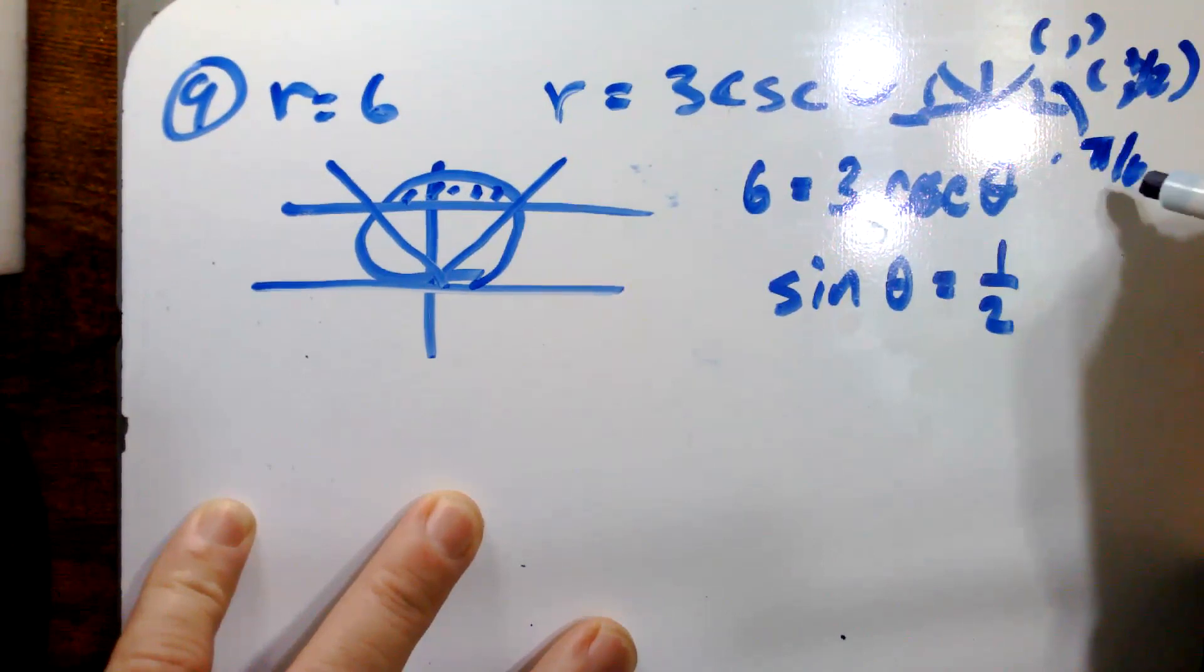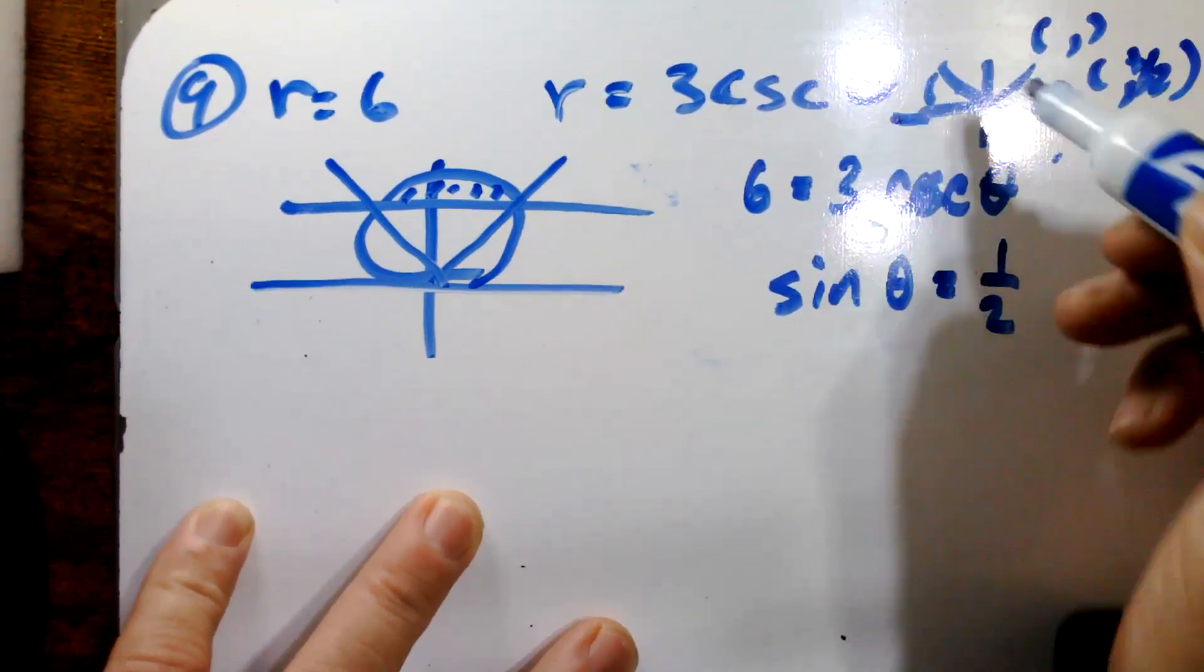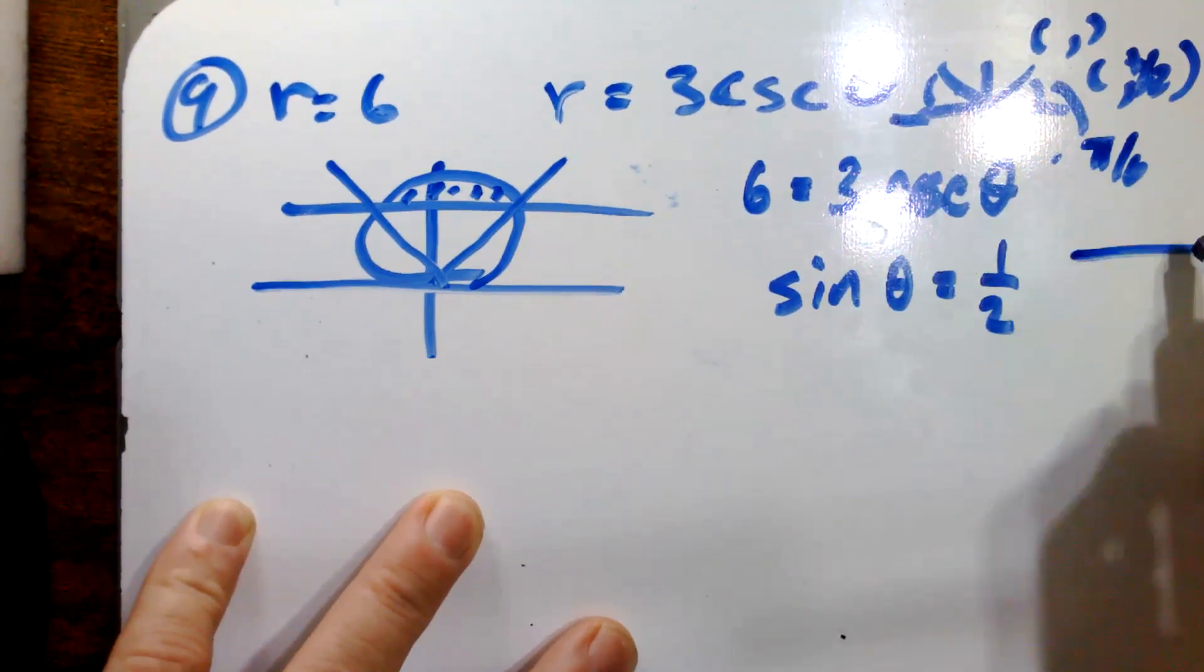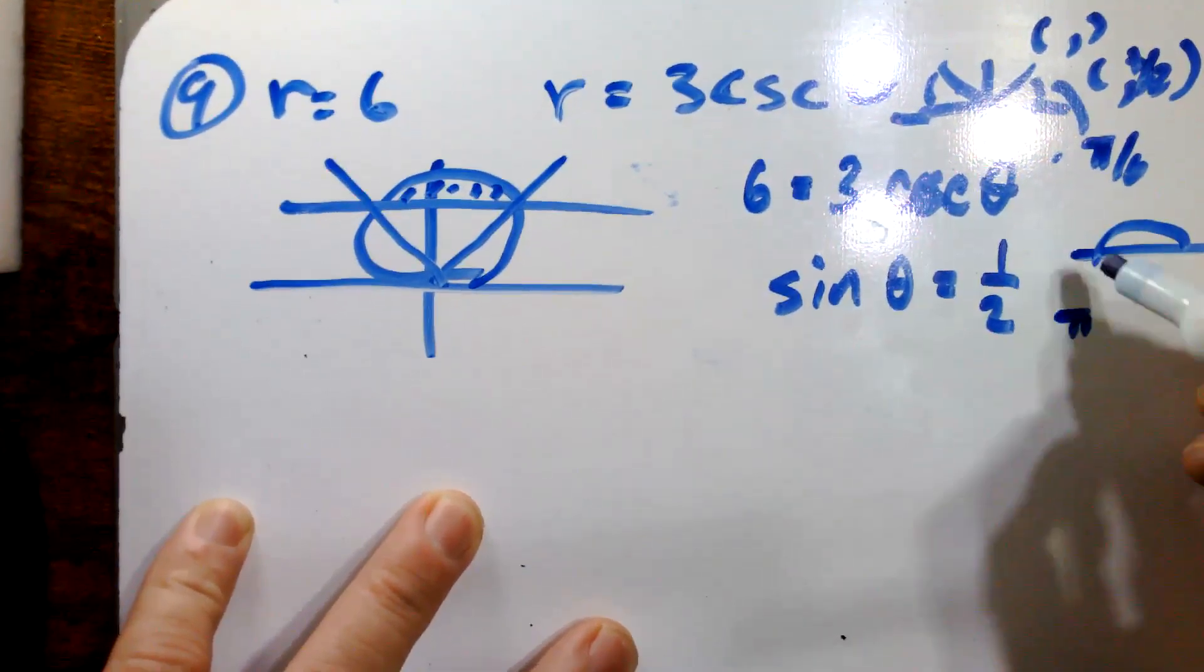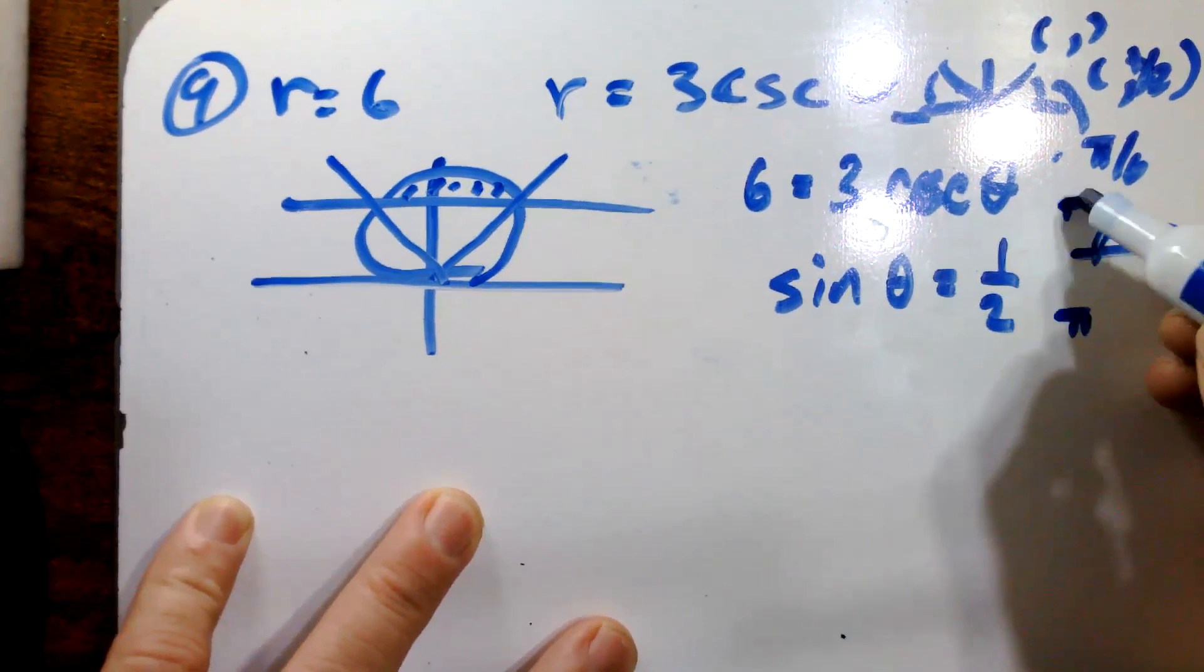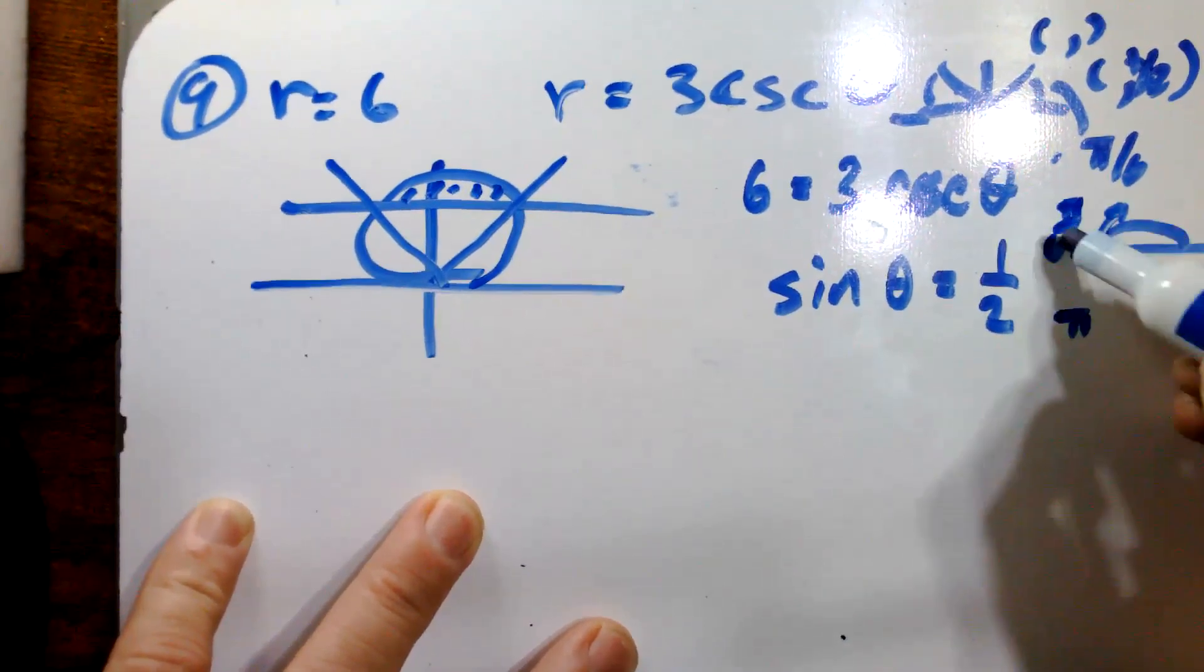So lower limit of integration would be pi over six. And the upper limit of integration would be, well, just like we did before, if this whole thing is pi, then how much do we go back? Well, we go back pi over six.